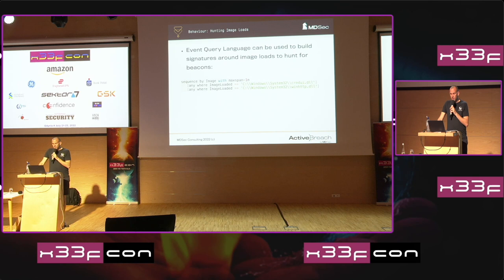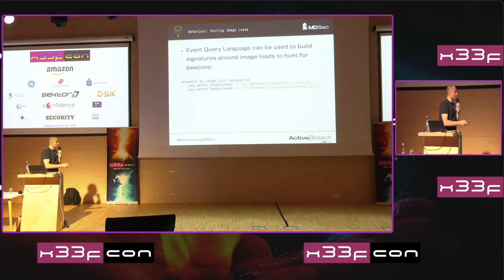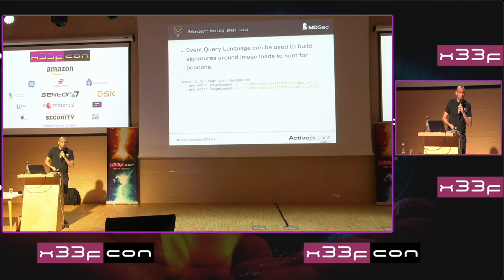So how do we go about hunting for these? Most EDRs have this built in — you can build hunt rules within your EDR. For my examples, I'm going to use Elastic. If you're not familiar with EQL, it's basically a SQL-like language that Elastic provides, allowing you to query the event database. In this example, I'm basically saying: give me all the processes that have loaded credui.dll and WinHTTP.dll within the space of a minute.